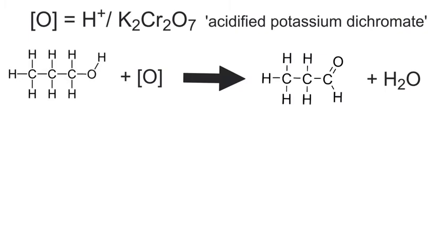Since this has been an oxidation, what we've definitely changed is our functional group: the OH has now become this group here, which is an aldehyde functional group. The C double bond O is referred to as a carbonyl functional group, and you can see it's directly bonded to the rest of the chain and a hydrogen. So it's now an aldehyde.